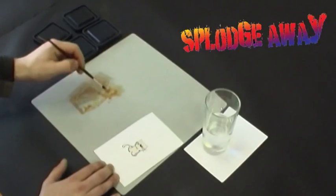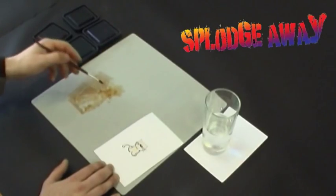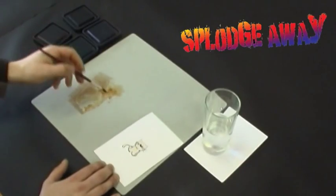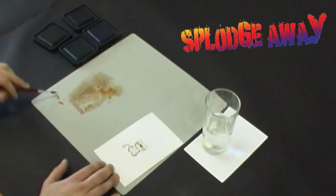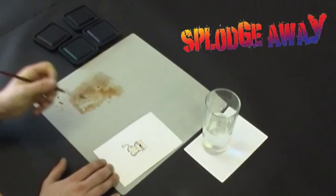Now if you notice how Splodge Away is actually holding the water in a really nice position. It's not allowing it to run too much. I'm taking the excess off the brush, and now we're going to use this wash, which is a darker wash, to apply shadows.